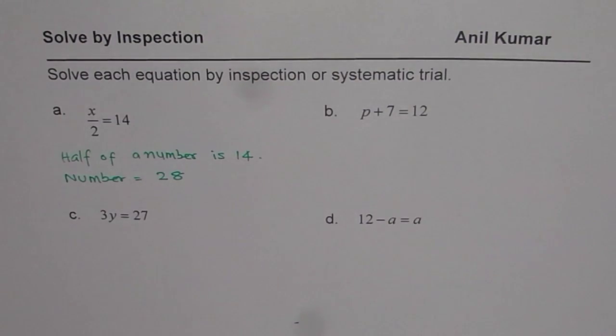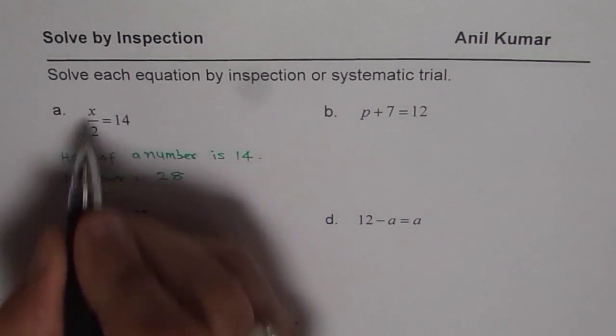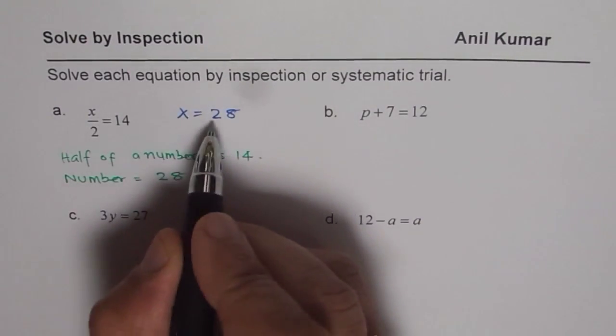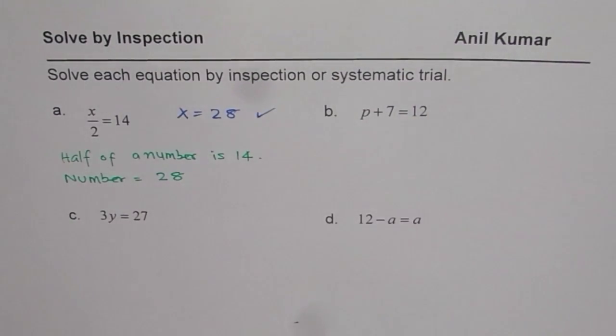So that is how you could get the answer by inspection. Let us work it out. If I write x equals 28, what do I get? 28 divided by 2 is 14. So that is correct.